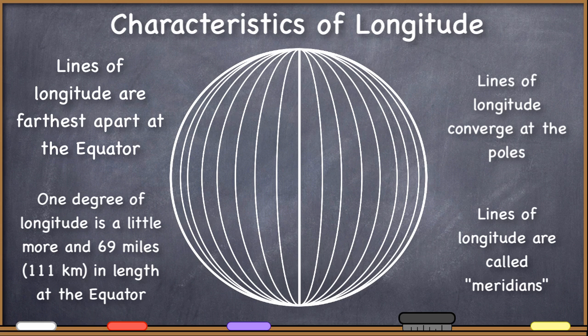Lines of longitude are sometimes called meridians, like lines of latitude are sometimes called parallels. Well, the equivalent in longitude is a meridian. Of course, the prime meridian is the one we call zero, but any line of longitude can just be a meridian.